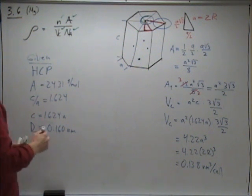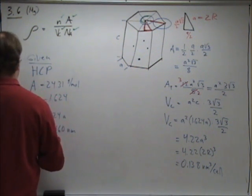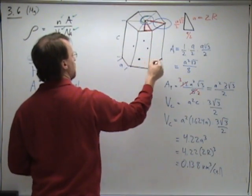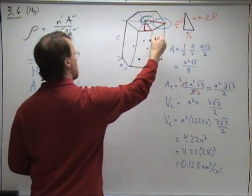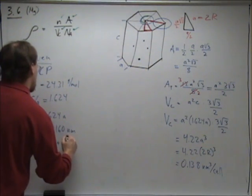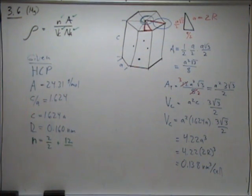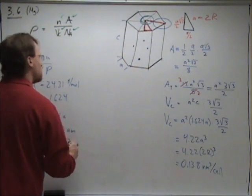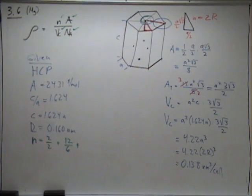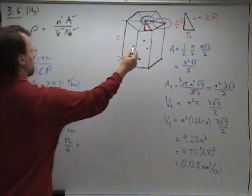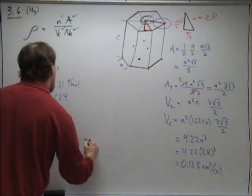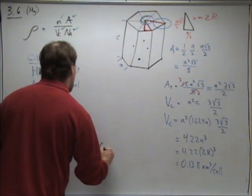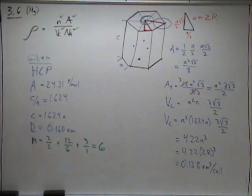So we have n equals 2 halves, plus we have one on each of 12 corners, six on the top, six on the bottom, and each of those is cut in 1 sixth. Only a sixth of them are in each cell. Then there's the three additional that are fully enclosed. 1 plus 2 plus 3, n equals 6, so we have n here.